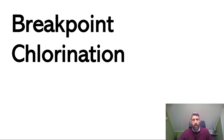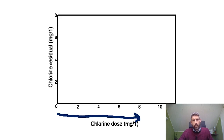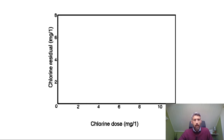We've got a pool with no chlorine but lots of ammonia, and what we need to do is add some chlorine. Along the bottom axis is going to be the chlorine that we dose in, and the vertical axis is going to be the chlorine that we can measure with the DPD tablet tests.